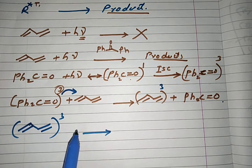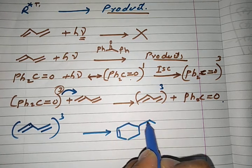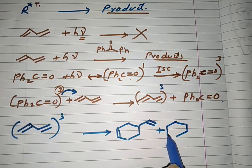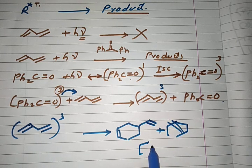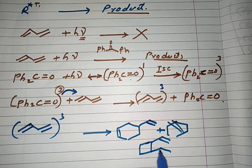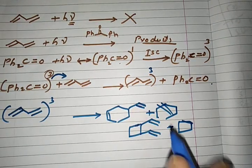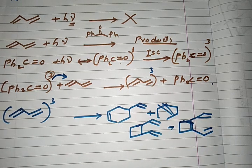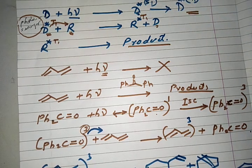This butadiene in the triplet state further proceeds to reaction and forms different types of products, as we have seen in pericyclic reactions. The possible products formed during this photochemical reaction of 1,3-butadiene include: a cyclobutene structure, a cyclobutane ring, and one more possible product — so these are the products from benzophenone acting as a photosensitizer.